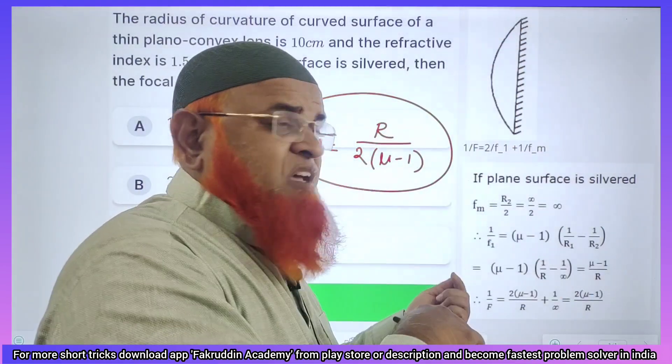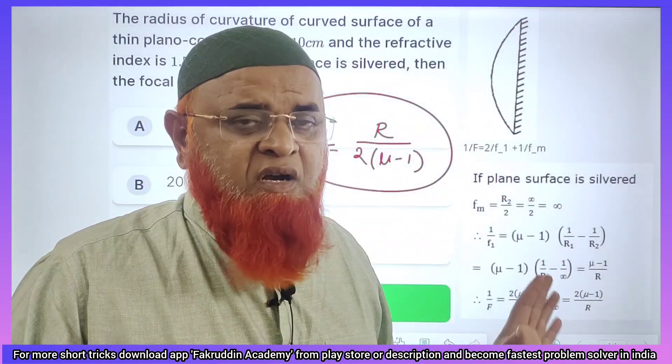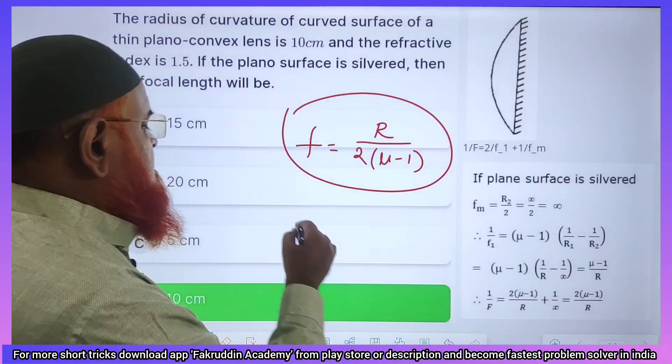Simply apply this shortcut formula whenever you get plano-convex lens and plane surface is silvered. That's it, this is enough to solve the problem.